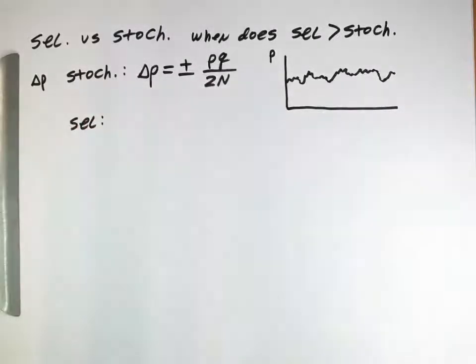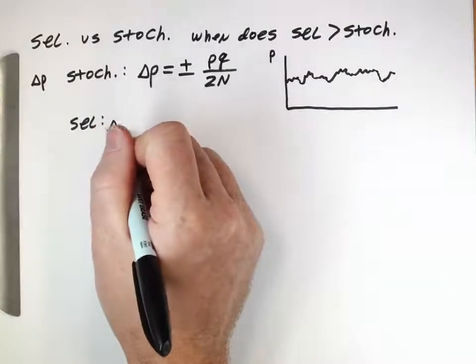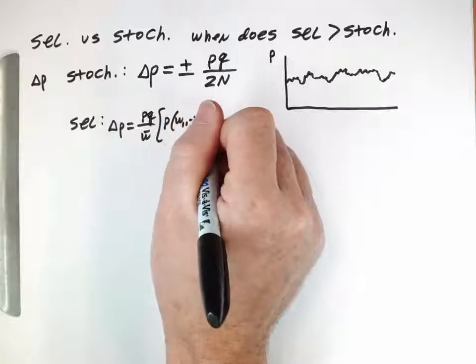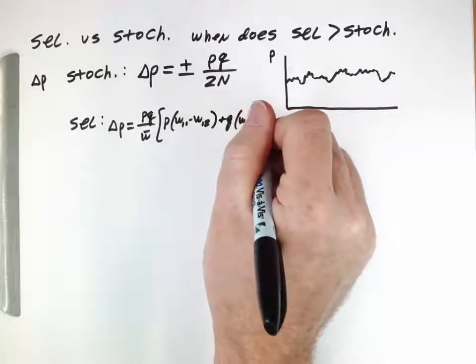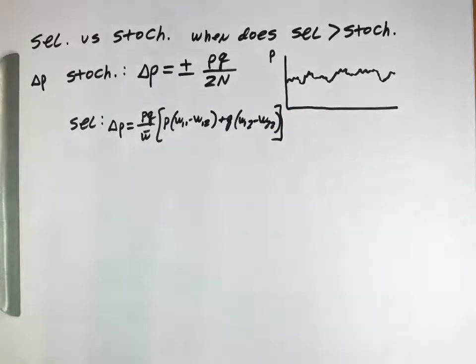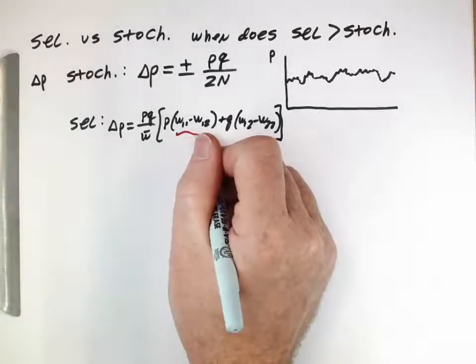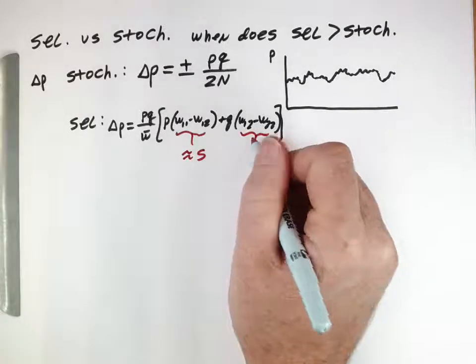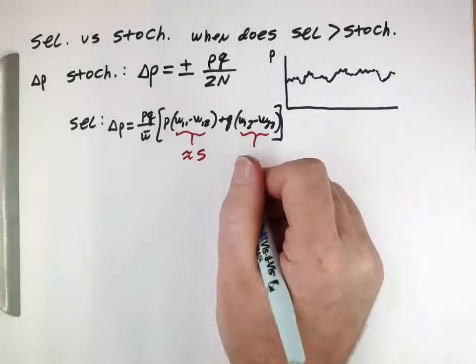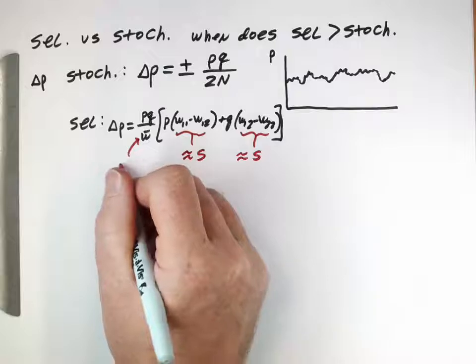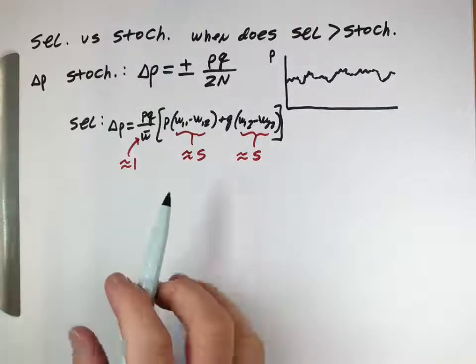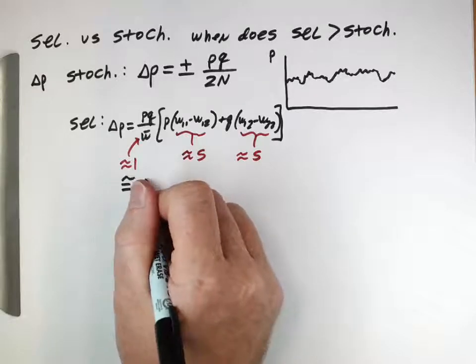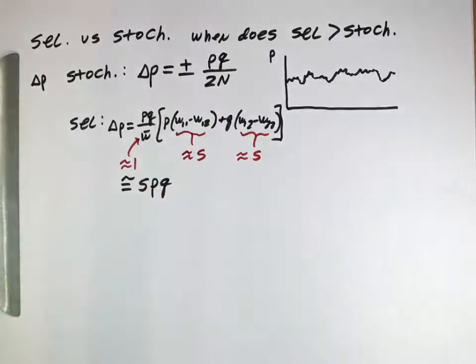What about selection? What's the change in the value of p due to selection? We have this equation: pq over w-bar times p(w11 minus w12) plus q(w12 minus w22). If we do some simplifications, where the selective coefficient s represents these differences and w-bar is approximately 1, then you'd actually end up getting roughly spq as being the change due to selection.